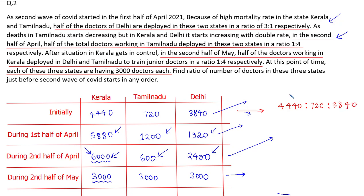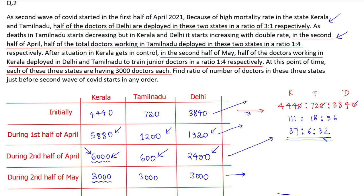That is Kerala : Tamil Nadu : Delhi = 4440 : 720 : 3840. Cancelling zeros and dividing by common factors — first remove a zero, then divide by 4, giving 111 : 18 : 96, then divide by 3, giving a final ratio of 37 : 6 : 32. This is the ratio of the number of doctors in Kerala, Tamil Nadu, and Delhi.